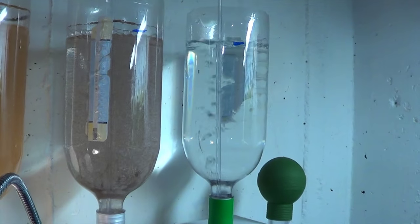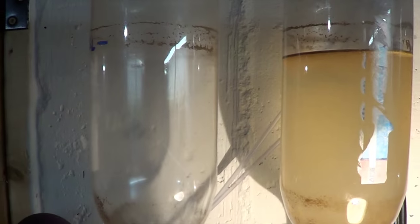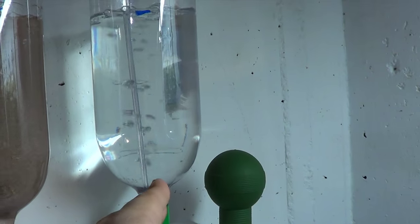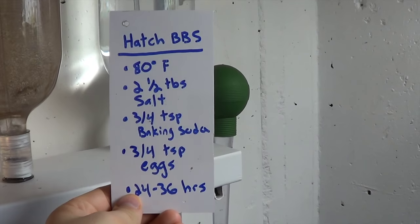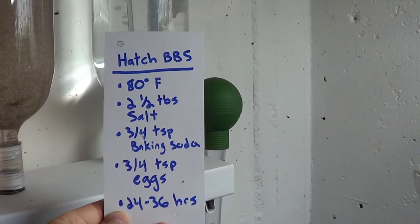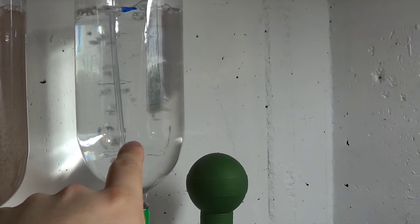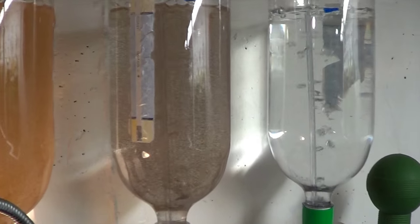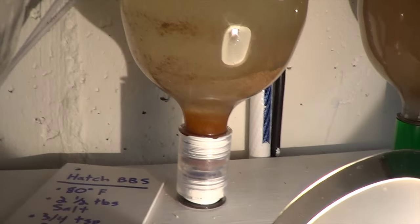It's been working really well for me. I've got brine shrimp in every stage of development. This is just an empty bottle. I've mixed my salt and baking soda. Here's the formula that I'm using into this bottle. And tomorrow morning, I'll add my brine shrimp to it. This morning, I added brine shrimp to this one. I added the brine shrimp to this one yesterday, and then these ones are ready to harvest.